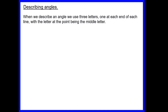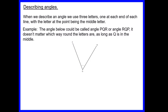Now we're going to look at describing angles. When we describe an angle we use three letters — one at each end of each line — with the letter at the point being the middle letter. For example, with line PQ and line RQ meeting at point Q, we label the angle using three letters: start at one end P, then Q (where the point is), then R — so angle PQR. Or we could go the other way: R to Q to P. The middle letter is always the one at the point.